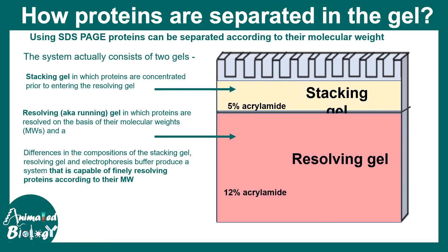The stacking gel is broadly 5%, so it has a very large pore size. The resolving gel is variable — for example 12%, or it could be 15% or 10%. The resolving gel has a relatively smaller pore size depending on concentration. The ionic strengths are different between the two gels, and the pH values are also different. So why are there so many differences?